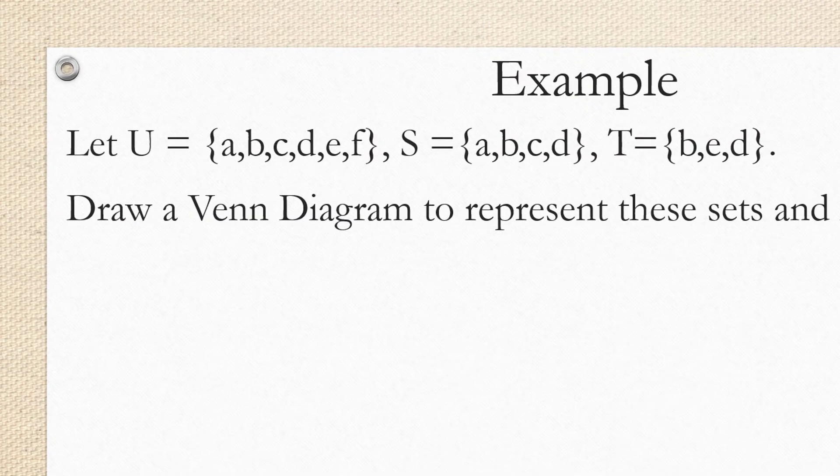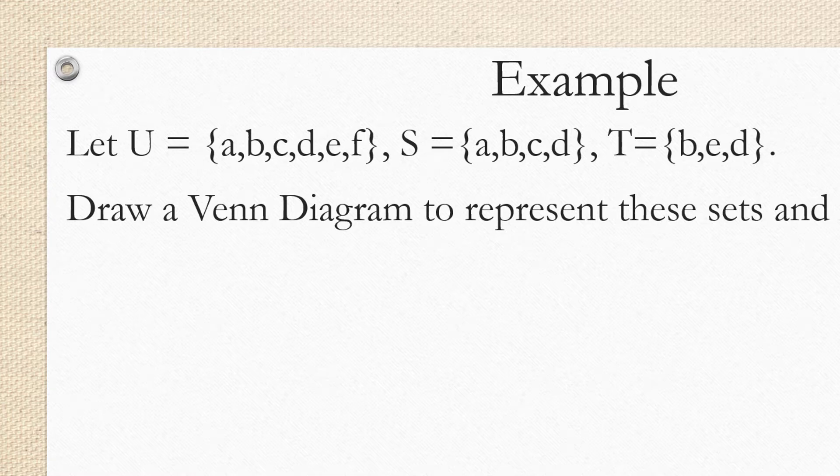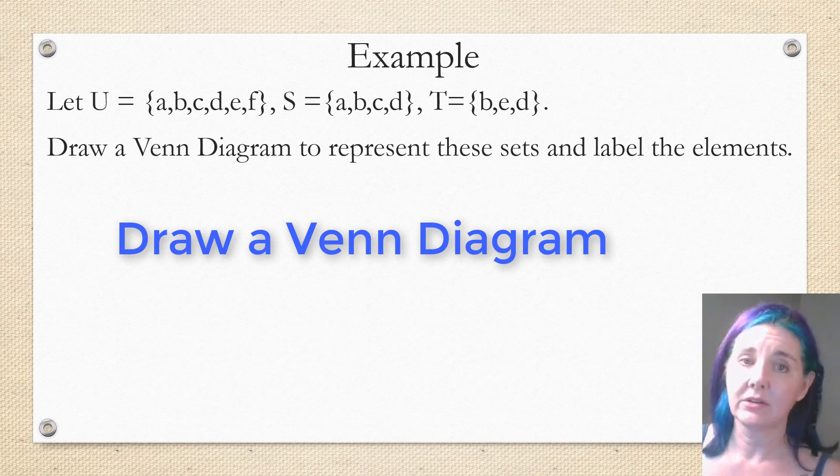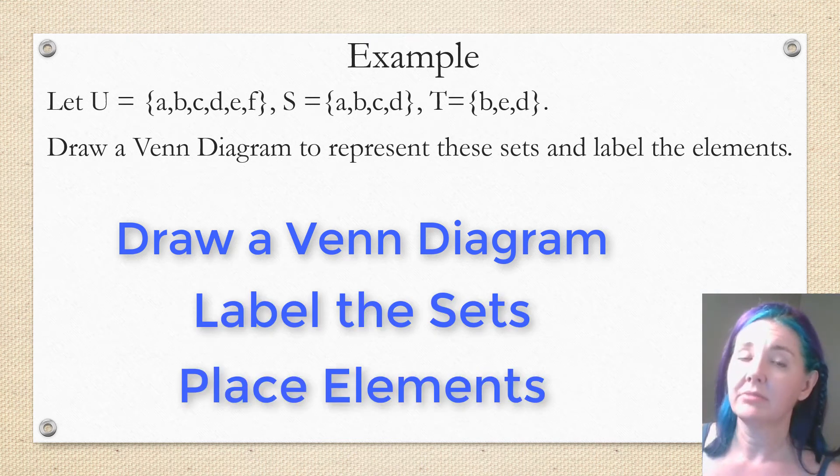So we're going to start with this example. It says, let U be the letters A, B, C, D, E, F, S the letters A, B, C, D, and T the set with the letters B, E, and D. We're going to draw a Venn diagram, label the sets, and place the elements in the correct regions of those sets.